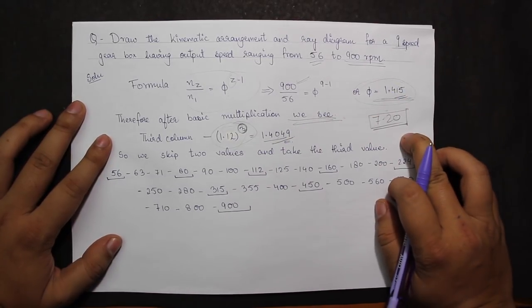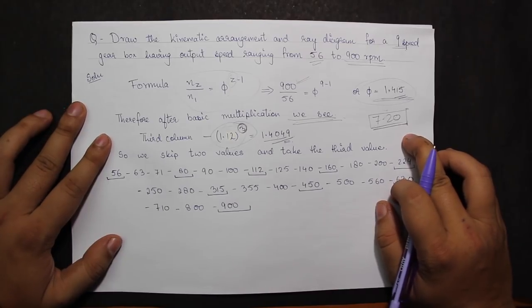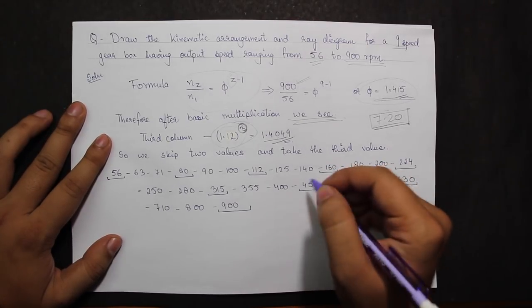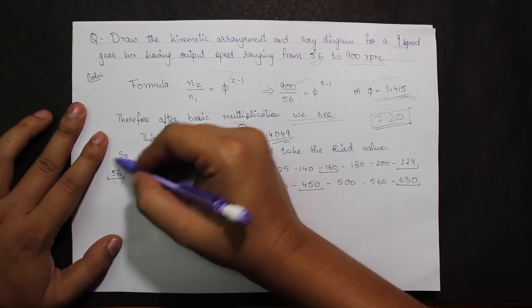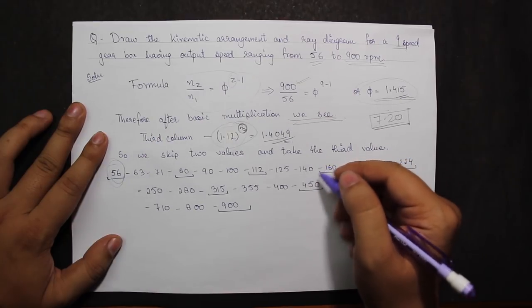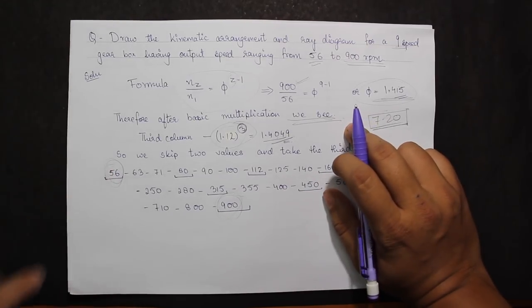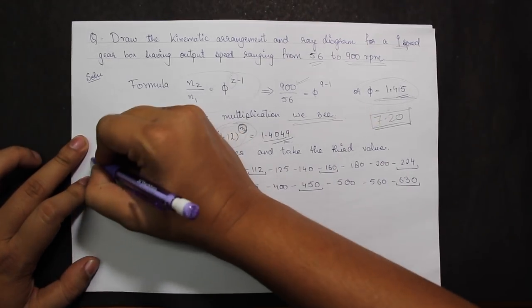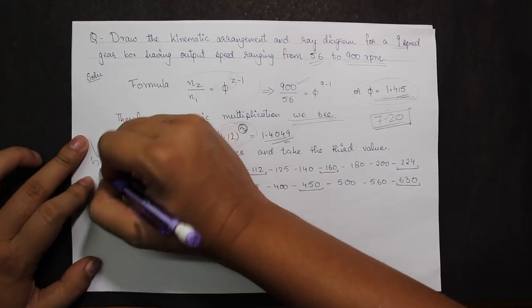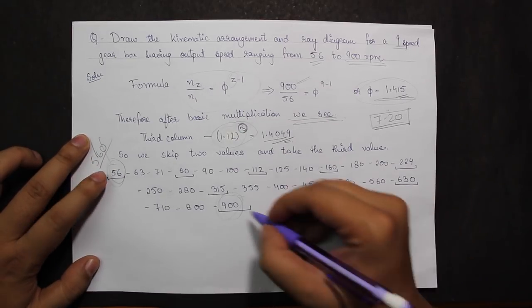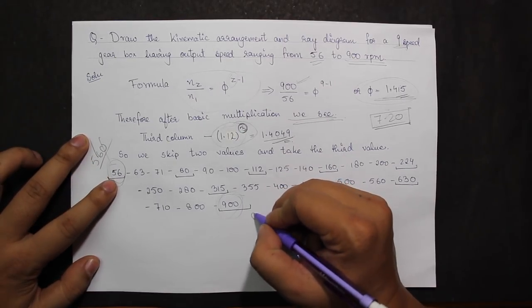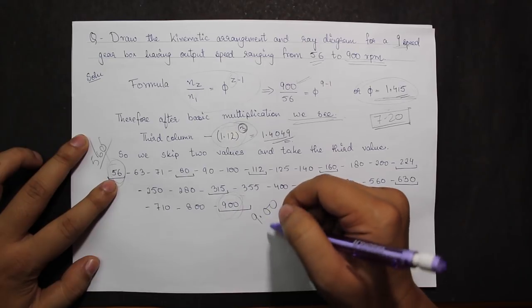Here I see that 56 is present in the column and 900 is also present in the same third column. 56 is written as 5.60, the decimal can be removed and the 0 can also be removed from the right side. 900 is given as 9.00, so after removing the decimal I get 900.